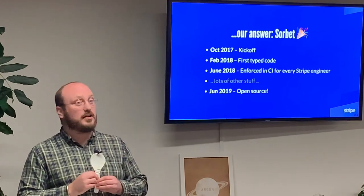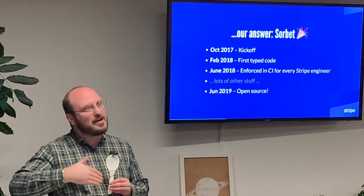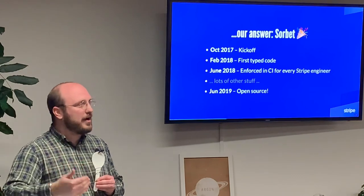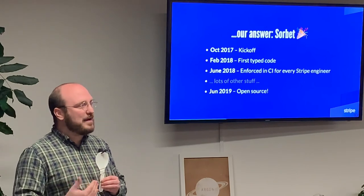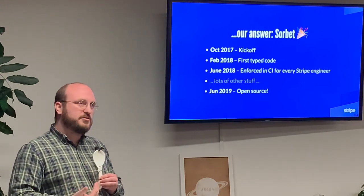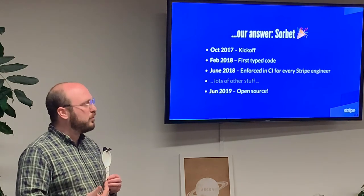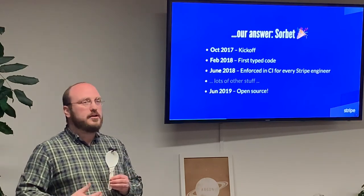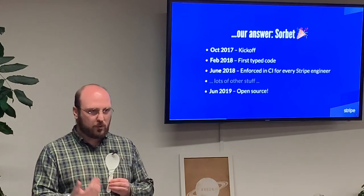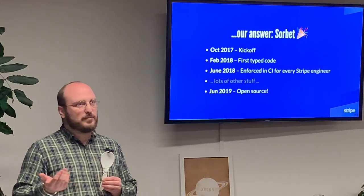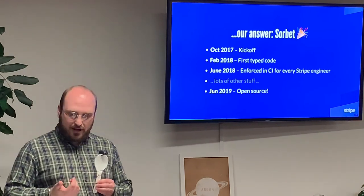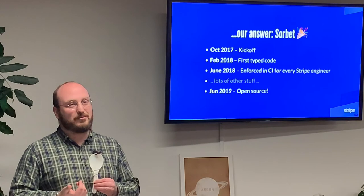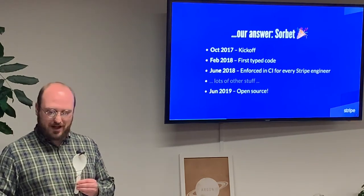During that time, we were adding more type signatures over time. We also started a beta during which we onboarded a number of other companies to use Sorbet internally — big names included Shopify, Kickstarter, and Gusto — to see what broke for them and what worked. Then in June of 2019, we released this as open source, so you can go try using it right now.